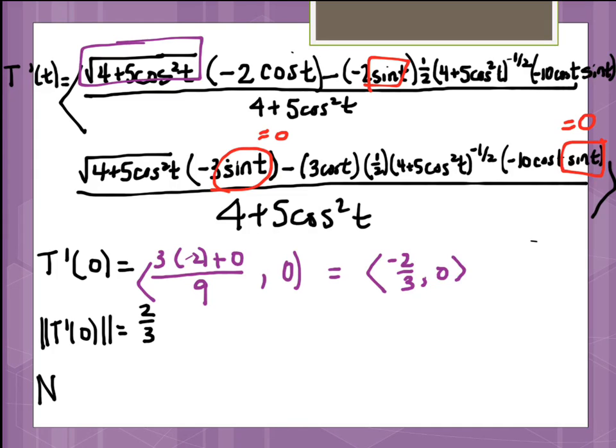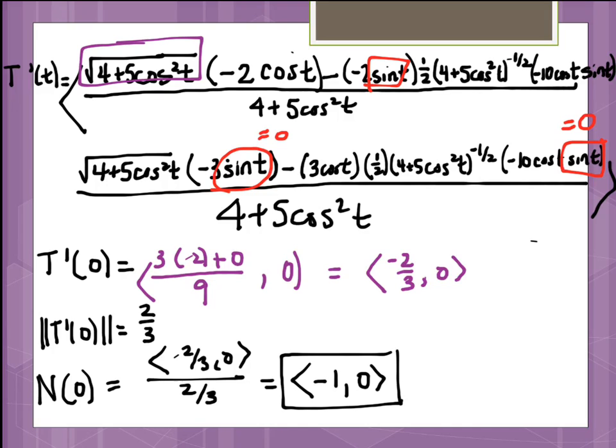So obviously the magnitude of t prime of 0 is 2 thirds. So my principal unit normal vector is going to be my vector <negative 2 thirds, 0> divided by 2 thirds, which gives me <negative 1, 0> for my principal unit normal vector.